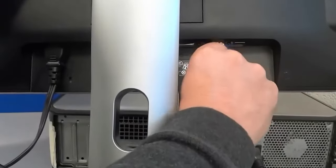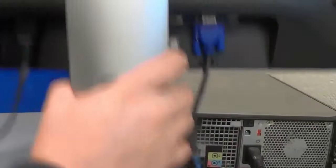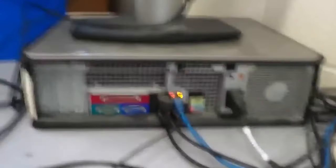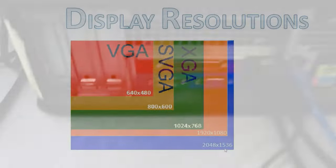Main disadvantages: it cannot transmit video and audio signal at the same time — only video signal is transmitted. The officially guaranteed maximum resolution is 2080x1024. There are possible quality issues when transmitting a picture to full HD monitors. If poor quality cables are used, flickering or other issues may appear. Finally, it's not the best choice for connecting modern electronics.